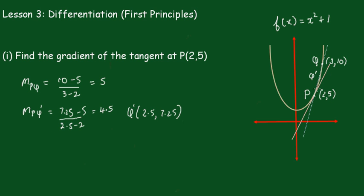Now I'll go closer to point P. We'll take the point Q'', make that (2.1, 5.41) - putting 2.1 into the function.